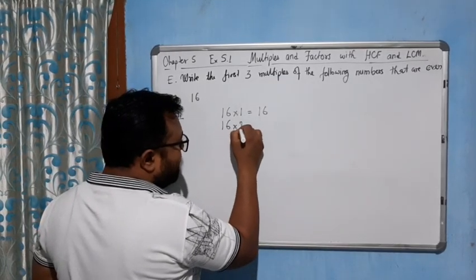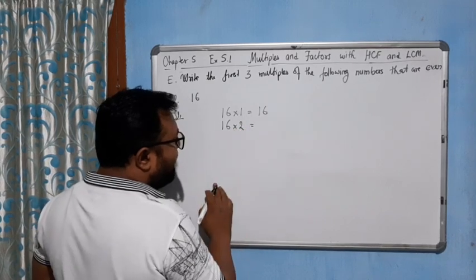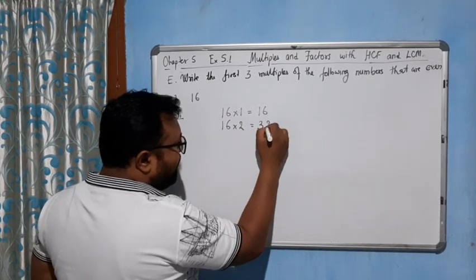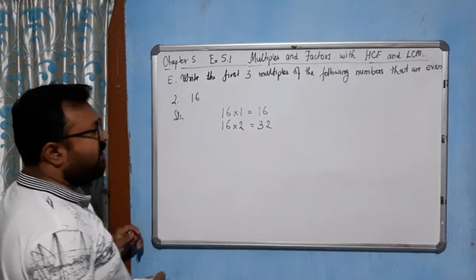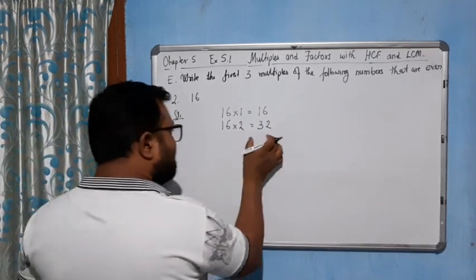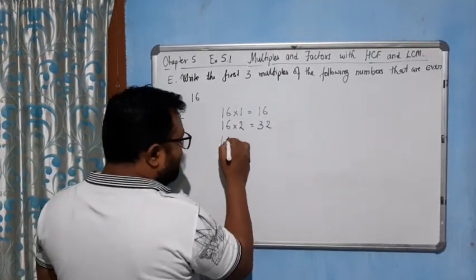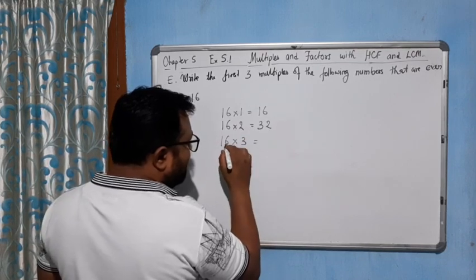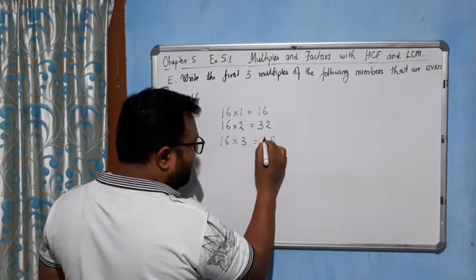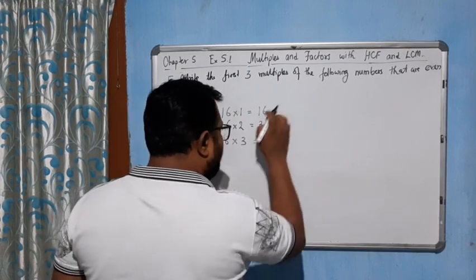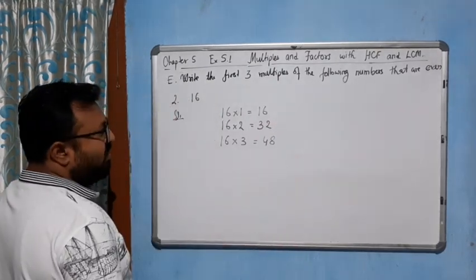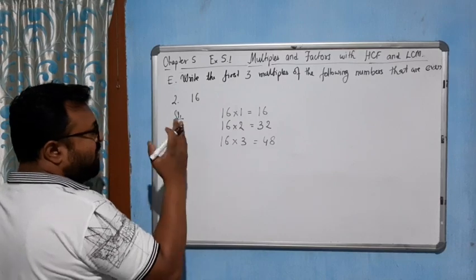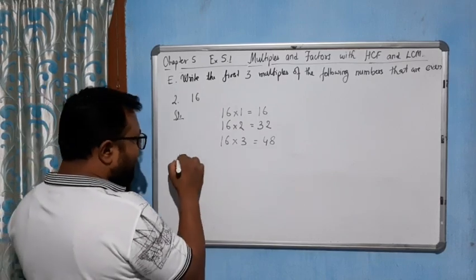Now come to 16 into 2, what we will get? 32, this is also an even number, so this is also applicable. Now 16 into 3, how much? This is 48. So all these three results are even numbers.